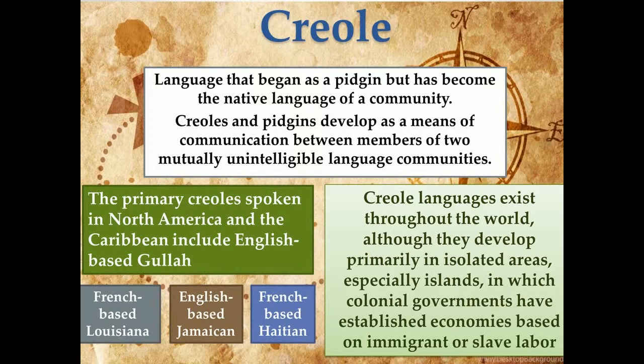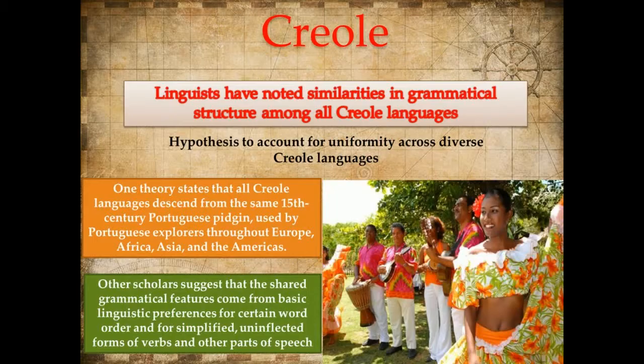The primary creoles spoken in North America and the Caribbean include English-based Gullah, French-based Louisiana Creole, English-based Jamaican Creole, and French-based Haitian Creole — all of which draw upon African languages. Linguists have noted some common features in grammatical structure among all creole languages: the use of repeated adjectives and adverbs to indicate intensity, and the use of particles to change verb tense.